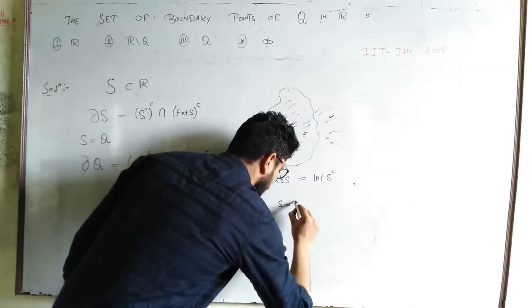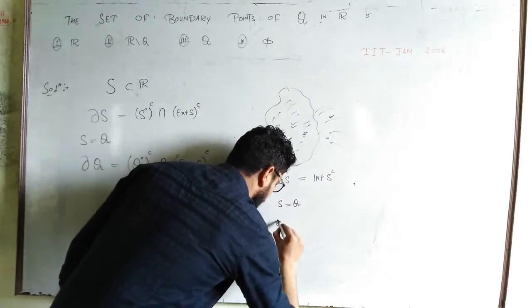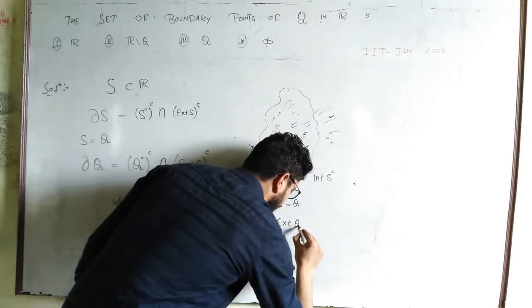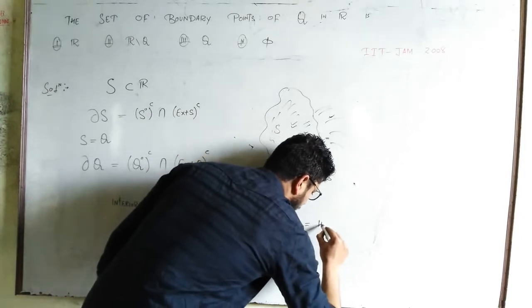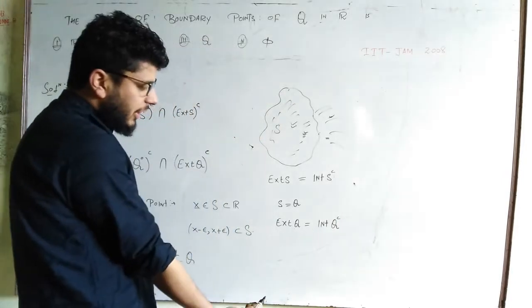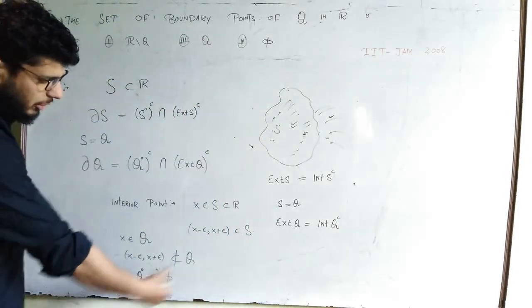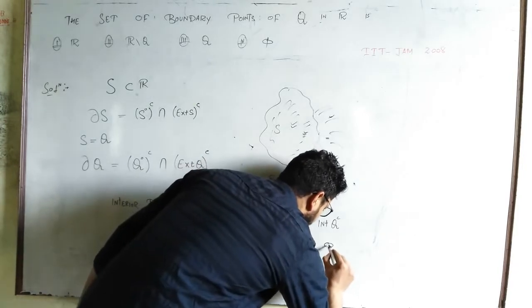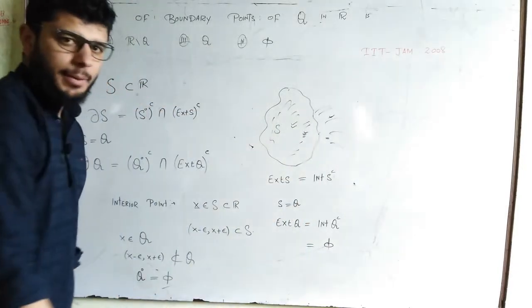Now here S is Q, so exterior of Q is equal to interior of Q complement. Q complement is set of irrationals. And by the same logic, you will find this interior of Q complement is φ.